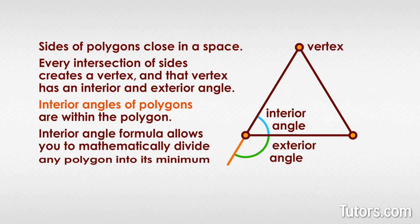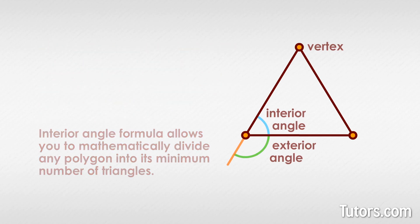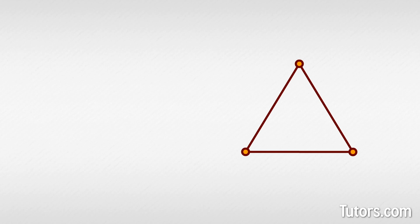This formula allows you to mathematically divide any polygon into its minimum number of triangles. Since every triangle has interior angles measuring 180 degrees, multiplying the number of dividing triangles times 180 degrees gives you the sum of the interior angles.